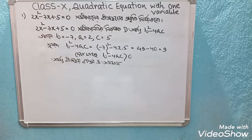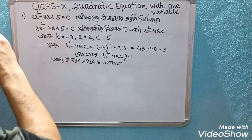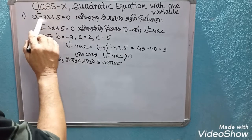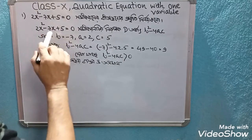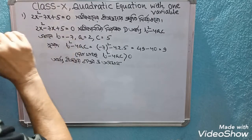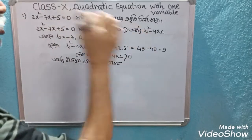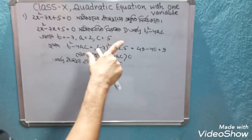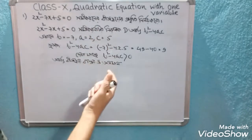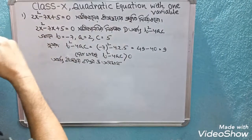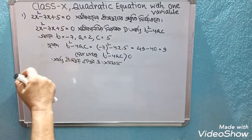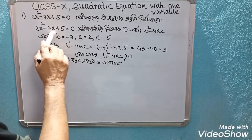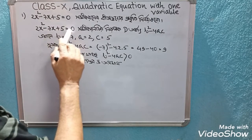So here we are going to take a look at the example: 2x squared minus 7x plus 5 equals to 0.